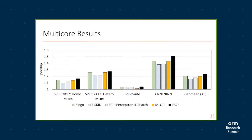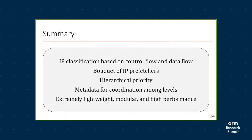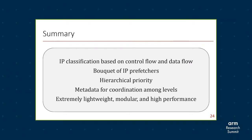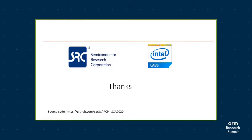We also perform well in the case of multicore workloads. Apart from CloudSuite, for which we need temporal prefetchers, in the rest of the suite we are equally effective. In summary, we propose an IP classifier based on the control flow — a bouquet of IP prefetchers which uses hierarchical priority among four classes. The classes are coordinated among themselves and provide an extremely lightweight, modular framework with high performance. The source code is available at the following link.